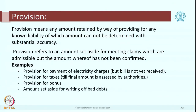Provisions are those amounts which are retained by way of providing for a known liability for which the amount cannot be determined with substantial accuracy. That means I know there is an obligation, I know there is a liability, but I do not know exactly how much should be payable. In such scenarios, you create a special item — it is also a type of liability but it has the special name 'provision'. Provision refers to an amount which is set aside for meeting claims which are admissible, but the amount is not yet confirmed.